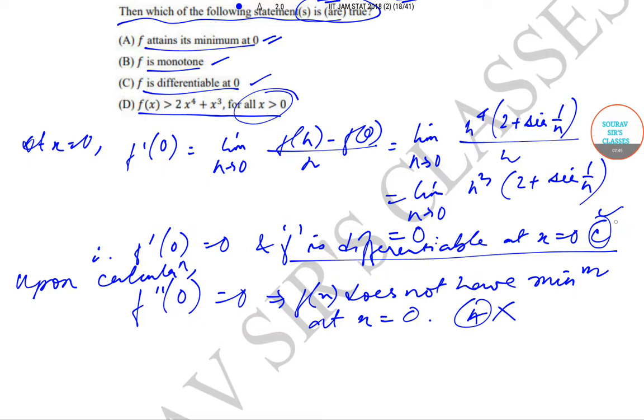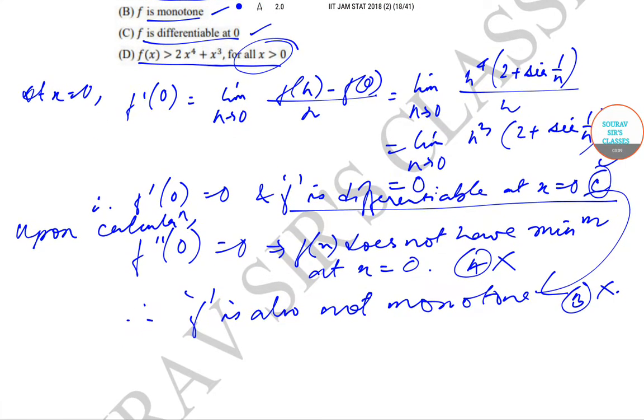And also it can happen that the function f is differentiable at x equal to 0, but it can be a local minimum or maximum but not a global maximum or minimum. So we can say that f is also not monotone. So option B is also incorrect.